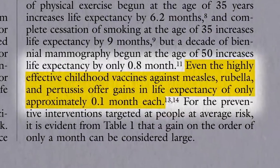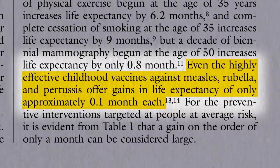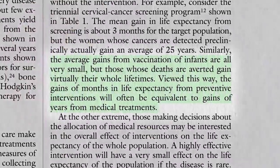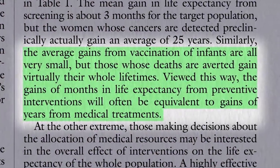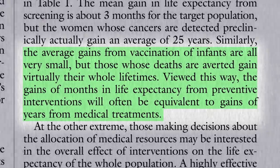For example, that's nearly identical to what you'd get from highly effective childhood vaccines. Because vaccines have been so effective in wiping out infectious diseases these days, they only add an average of about three extra days to a child's life. But of course, if your child is the rare life that gets saved, they gain an entire lifetime — that's why we vaccinate. It just seems like such a small average benefit because it gets distributed over the many millions of kids who get the vaccine.